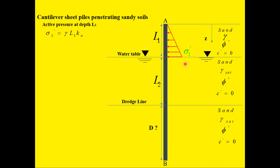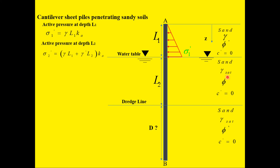Sigma 1 prime has a triangular distribution starting at zero from the surface, with its maximum at Z equals L1. The active pressure at depth L2 is sigma 2 prime, which equals (gamma × L1 + gamma_prime × L2) × Ka. Note that we use gamma prime instead of gamma saturated because when calculating lateral earth pressure we use effective stress, not total stress. Gamma prime equals gamma saturated minus the unit weight of water.